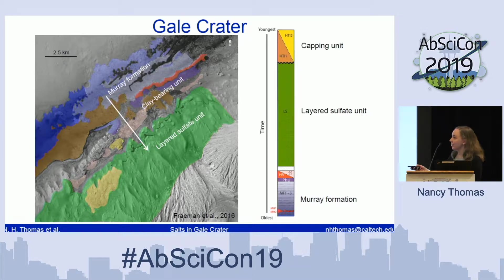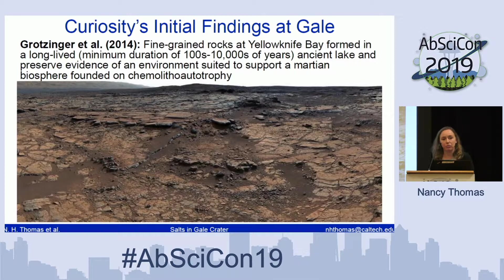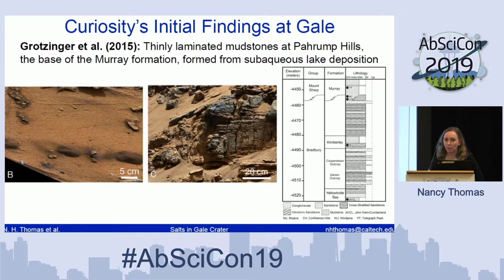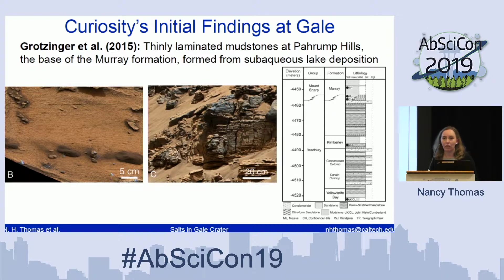Curiosity started on the floor of Gale Crater and is currently in the clay-bearing unit. Some of Curiosity's initial findings were these beautiful fine-grained rocks in the Yellowknife Bay area, which record a long-lived ancient lake and preserve evidence for an environment suited to support a Martian biosphere founded on chemolithoautotrophy. A separate Grotzinger et al. paper began studying the Mount Sharp sedimentary sequence, first encountered at the Pahrump Hills member of the Murray formation, where finely laminated rocks consistent with subaqueous lake deposition were observed.